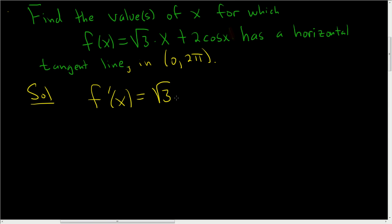So the derivative of the square root of 3 times x is the square root of 3. The derivative of cosine x is negative sine, so you just get negative 2 sine x. And you set this equal to 0.